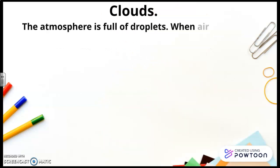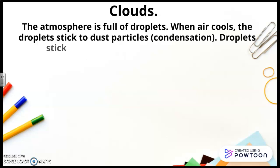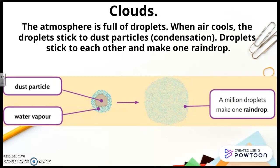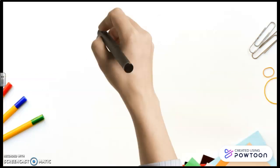Clouds. The atmosphere is full of droplets. When air cools, the droplets stick to dust particles - condensation. Droplets stick to each other and make one raindrop. Here you are the dust particle, the water vapor, and a million droplets make one raindrop.